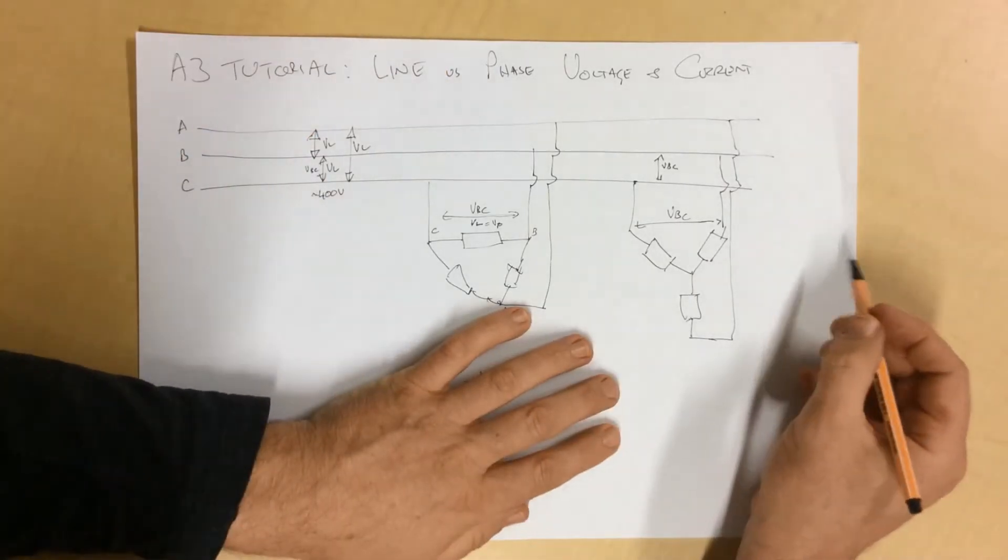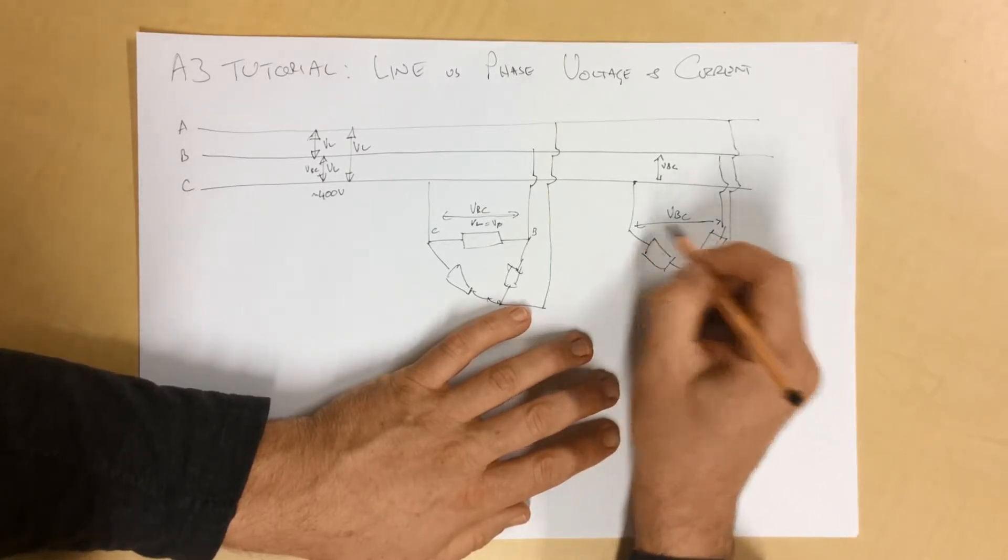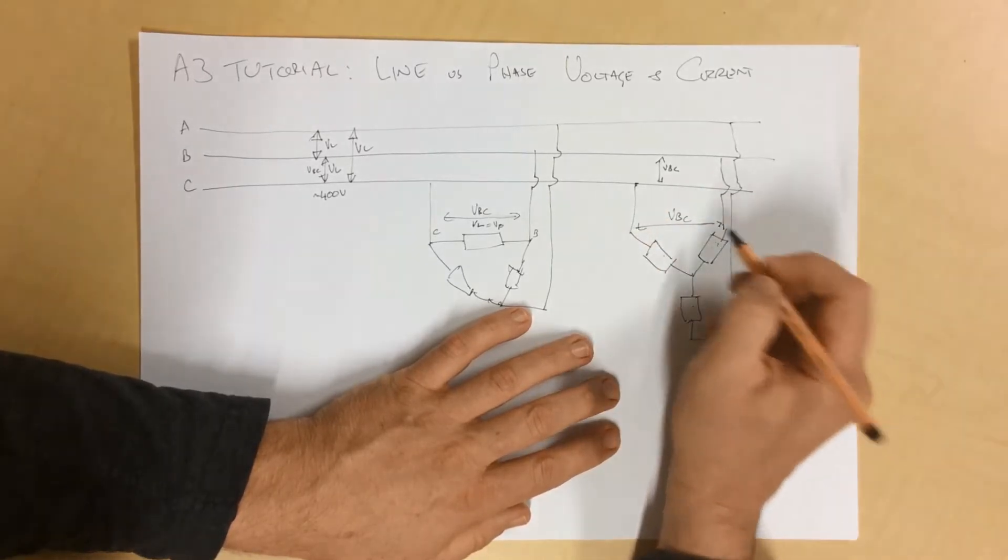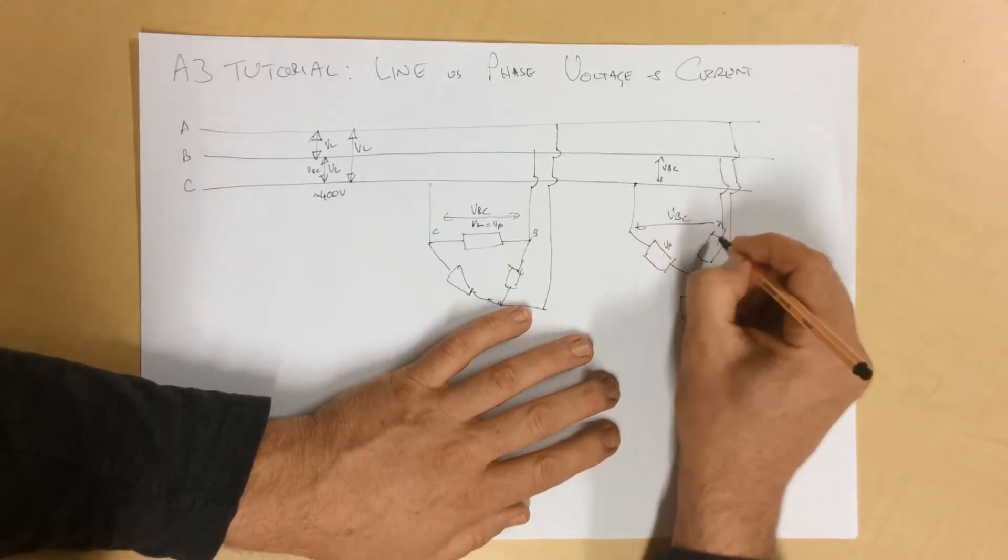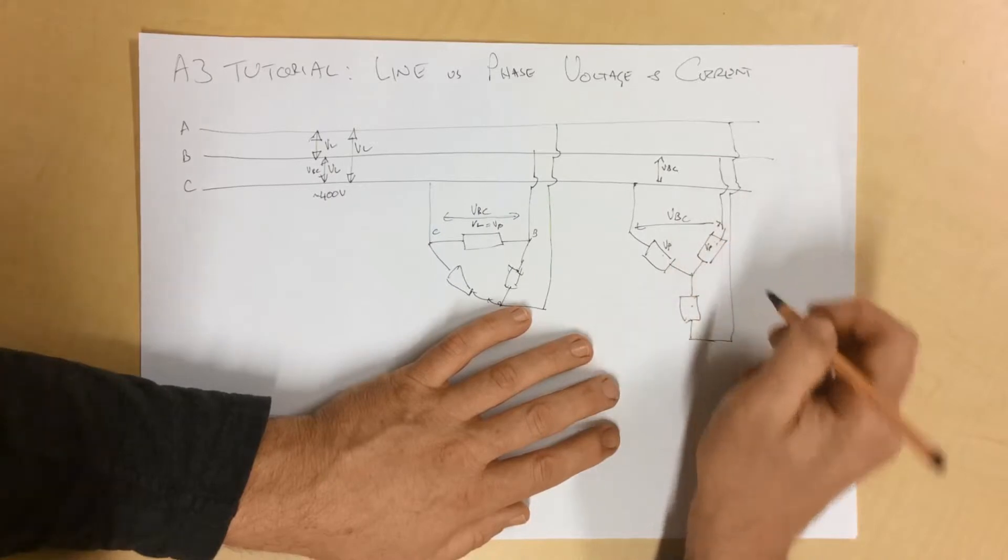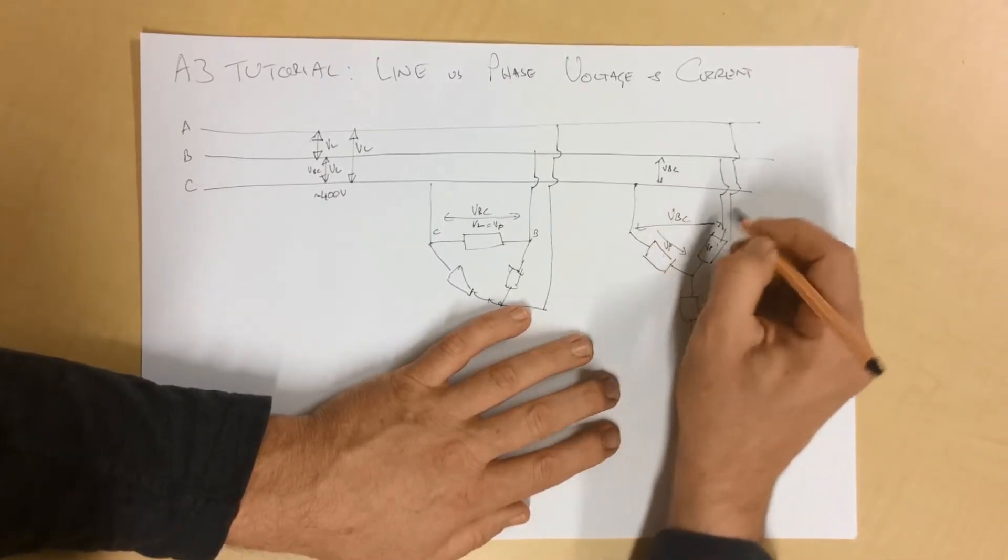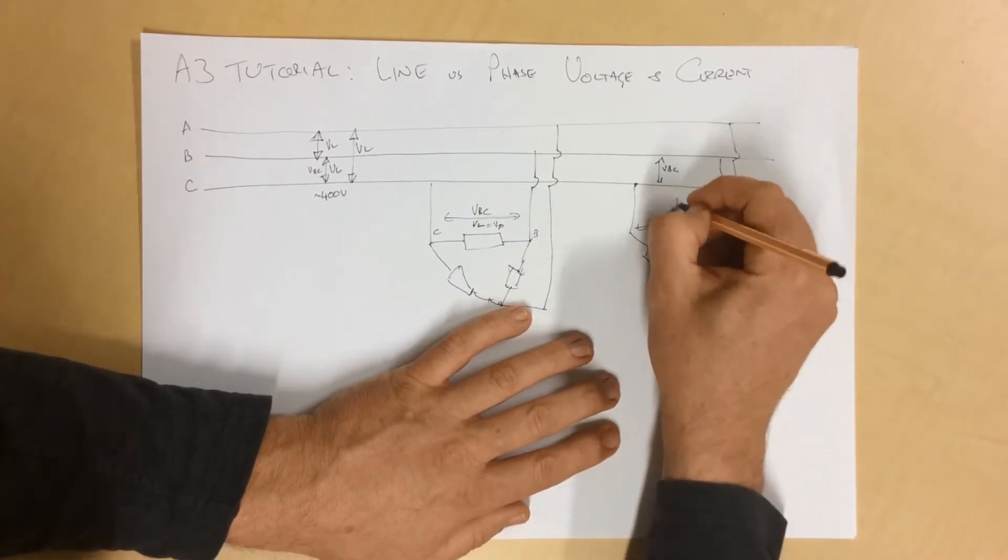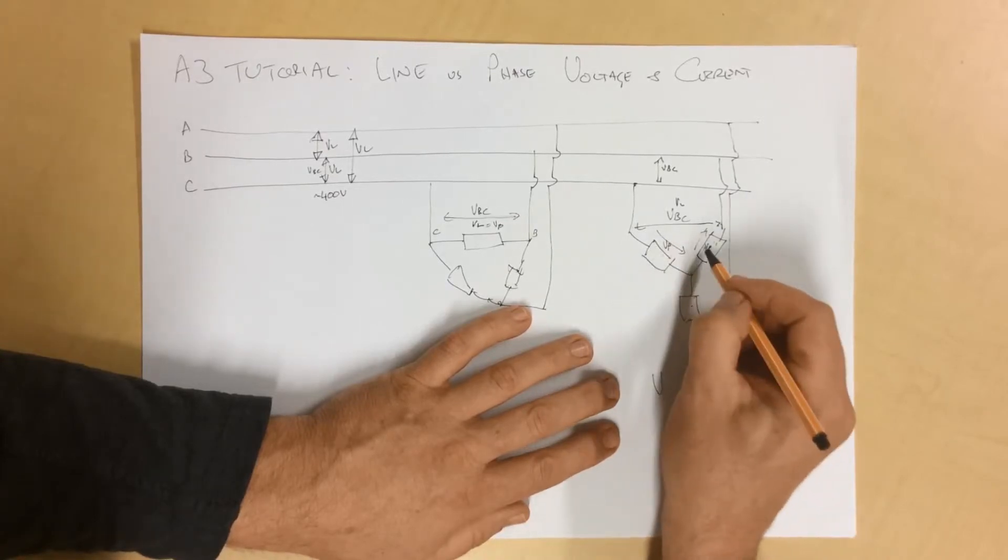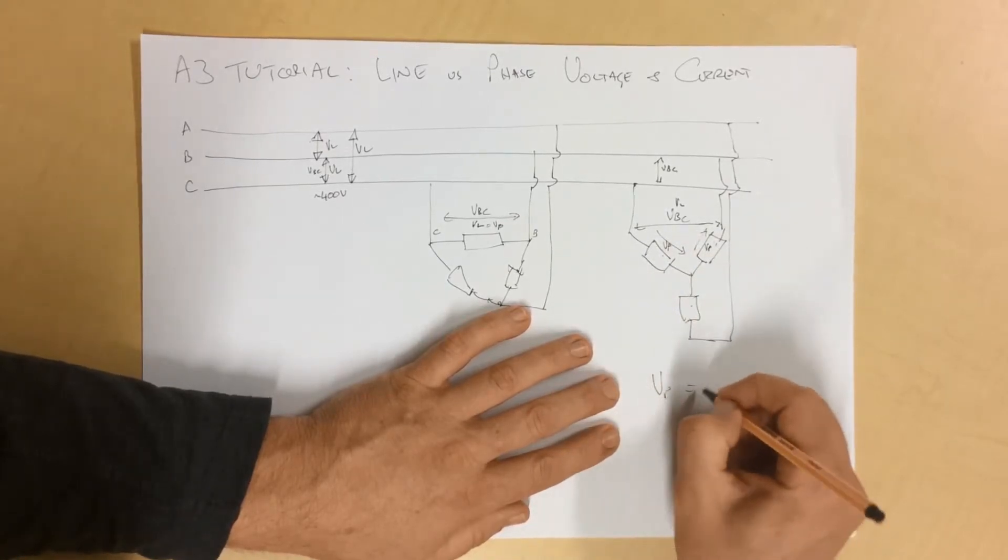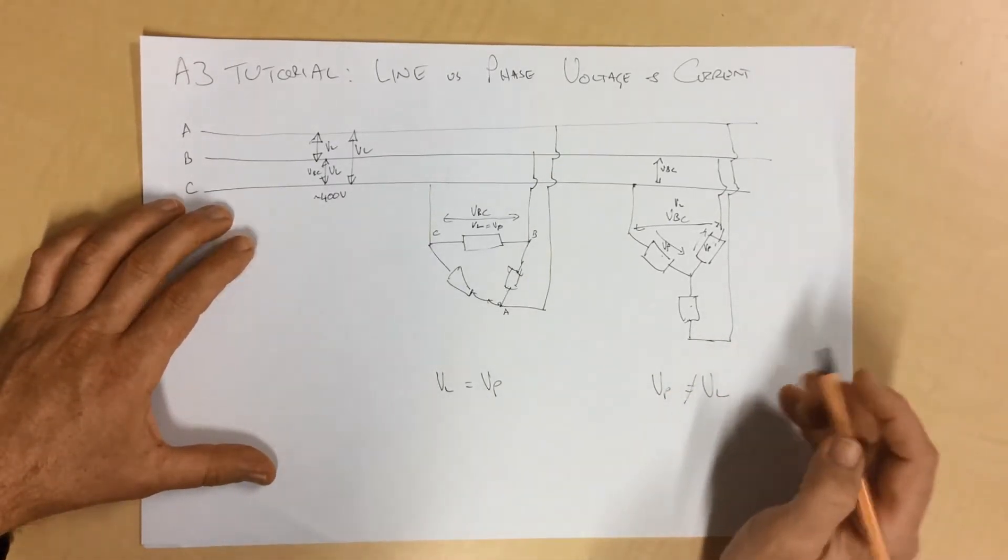Now, it's quite clear that these phase points here, our phase windings, the voltage across here, between B and C, is across both of these phase windings. This V here, this V here, and the voltage of our phase, it is very clear that the phase voltage is not the same as our line voltage. It is not the same.